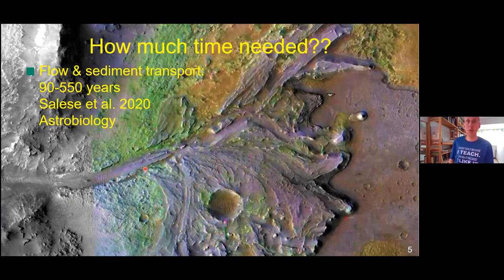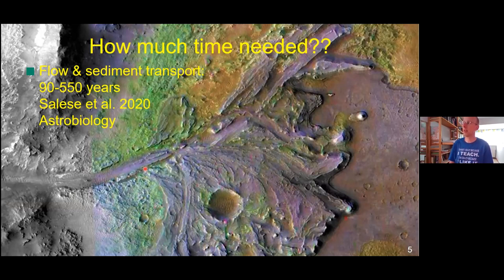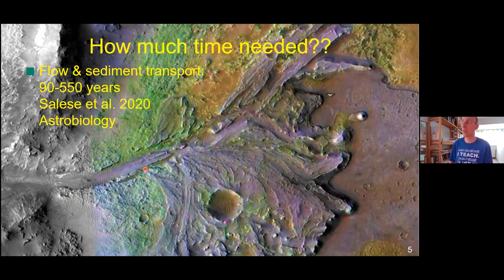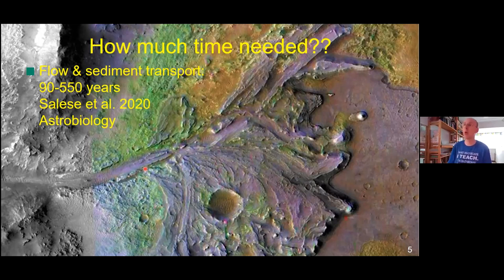This allows us to calculate time scales of water activity. Francesco Salese and I worked on the delta in Jezero crater, where the Perseverance rover has just landed. This delta was found to have formed in a time span on the order of one century of water flow. You probably know better than I do that one century of wet conditions is probably not long enough to form life. So these calculations have implications for the emergence of life on planets.